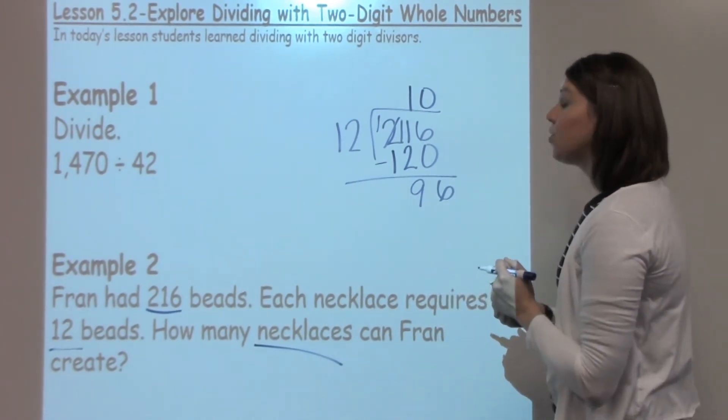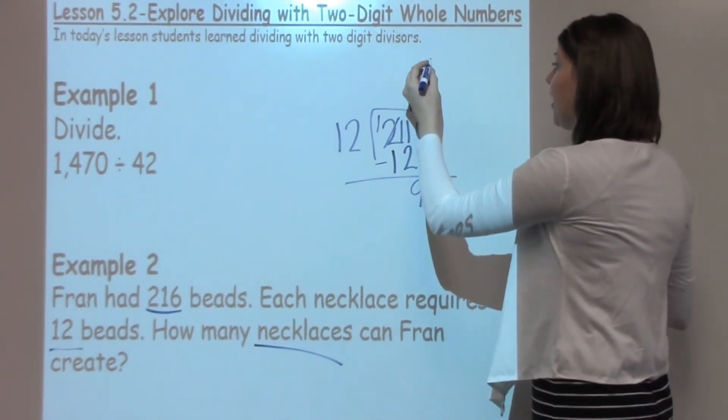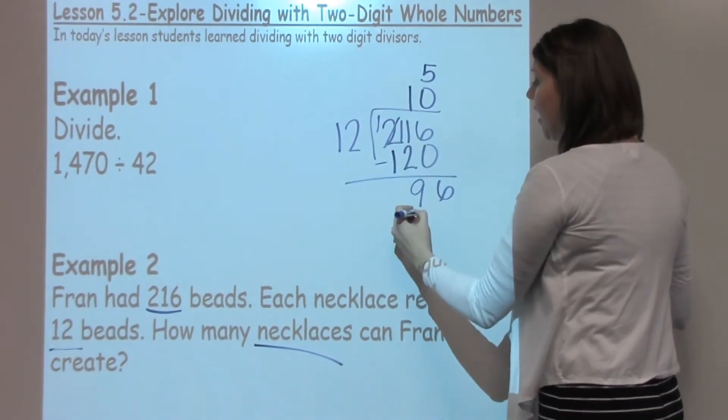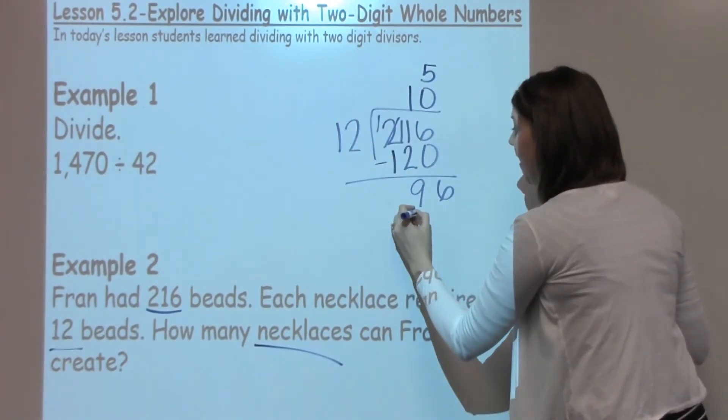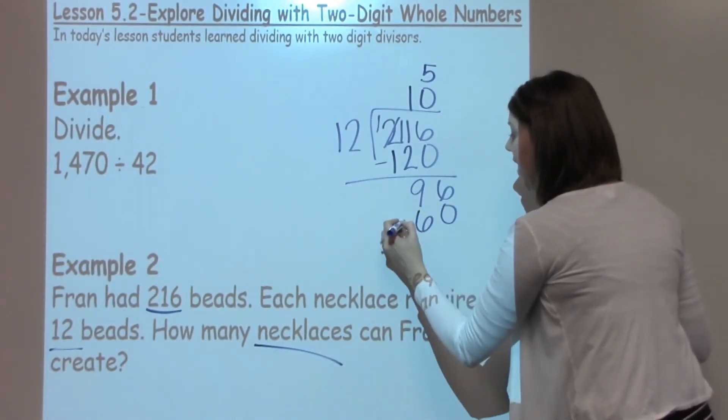Now, in this case, I'm going to use 12 times 5, because I know that's 60. I'm going to put my 5 on top, which is going to give me 12 times 5, which is 60. And now, I'm going to subtract.